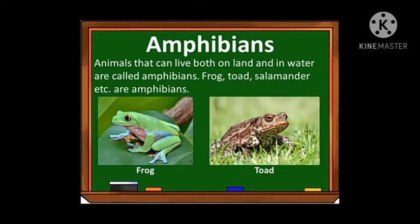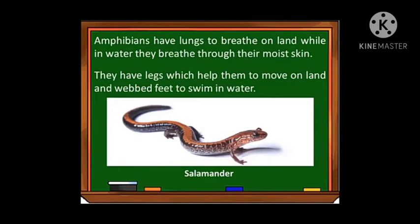The next type is amphibians. Amphibians are animals that can live both on land and in water — for example, frogs, toads, and salamanders. As they live in both environments, they must breathe in both. Amphibians have lungs to breathe on land, while in water they breathe through their moist skin.